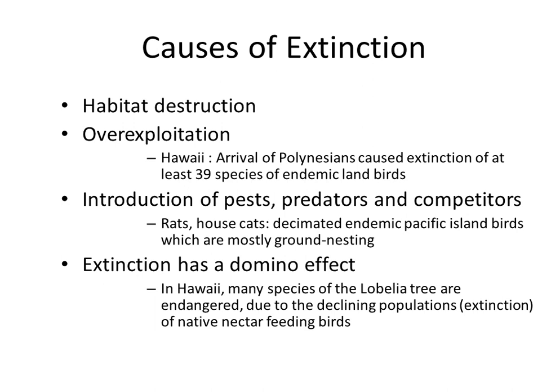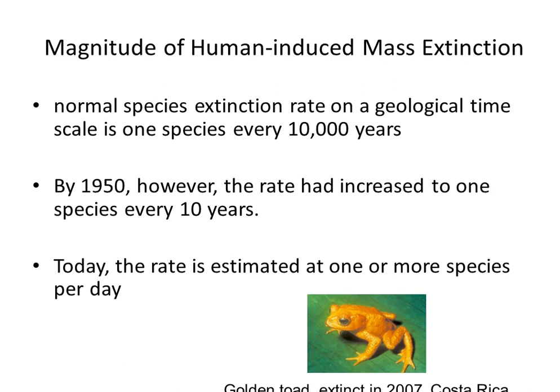Extinction has a domino effect. When you lose a species like the lobelia tree in Hawaii, the native nectar-feeding birds also declined. The normal species extinction rate on a geological timescale is one species every 10,000 years. By 1950, this rate had increased to one species every 10 years. Today, the rate is estimated at one or more species per day. Here is a picture of the golden toad, extinct in 2007 in Costa Rica.